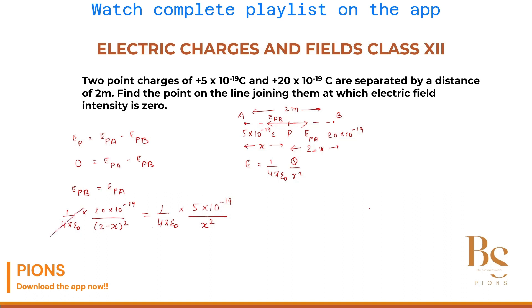Now 1 by 4 pi epsilon 0 and 1 by 4 pi epsilon 0 straight away cancels. If you have such confusion, take 4 pi epsilon 0 on the left hand side. It will go in the numerator, then you can cancel out. 10 to the power minus 19 and 10 to the power minus 19 gets cancelled.